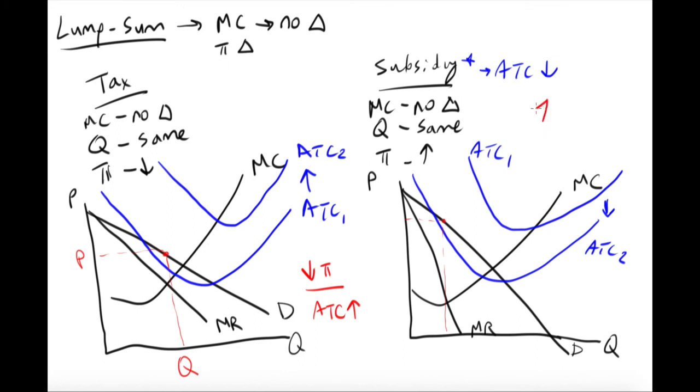The main takeaway here is your profitability goes up, your average total cost goes down. That's the main takeaway in the case of a subsidy. So again, to review, in the case of a lump sum tax or subsidy, there is no change in the marginal cost. However, there is a change in profitability.